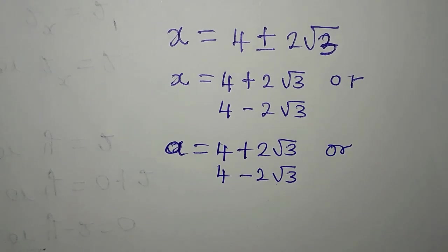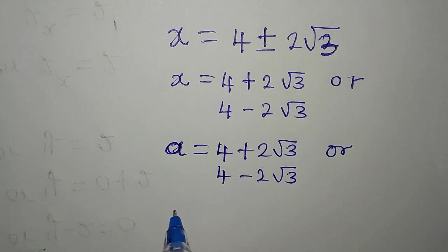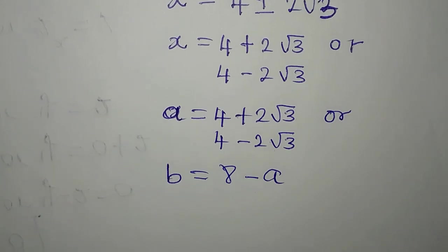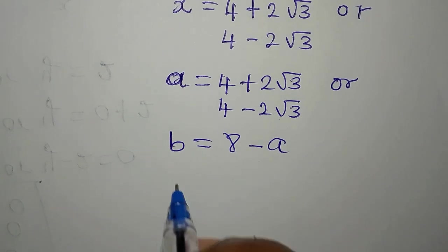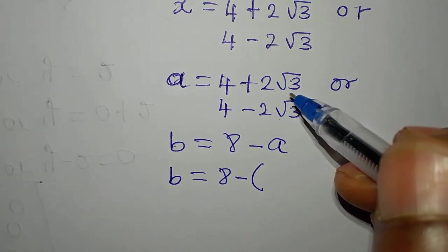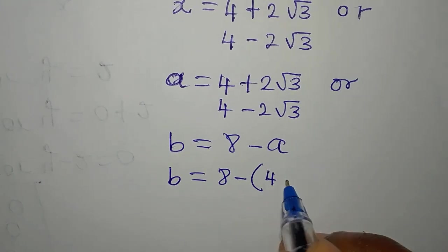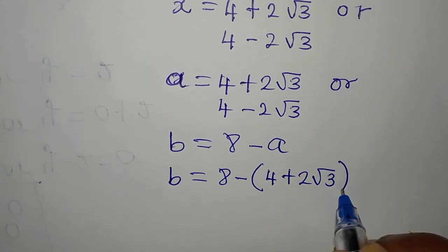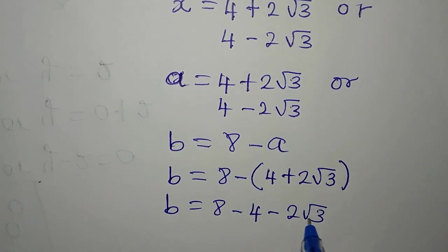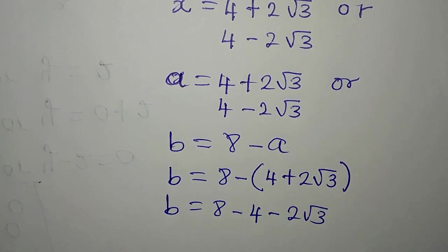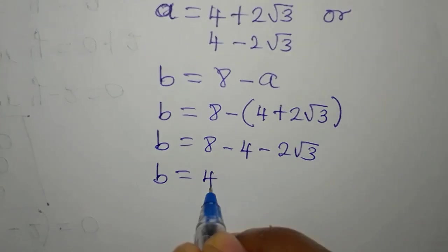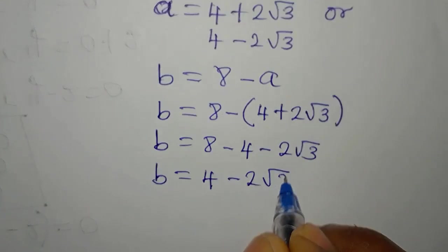So we will put this into equation 3. And what is our equation 3? B equals 8 minus A. So now that we have the value of A, we put into this. So B will be 8 minus open bracket. I'll pick the first value of A and it is 4 plus 2 root 3. Now, B is 8 minus 4 minus 2 root 3. The negative here will open the bracket.